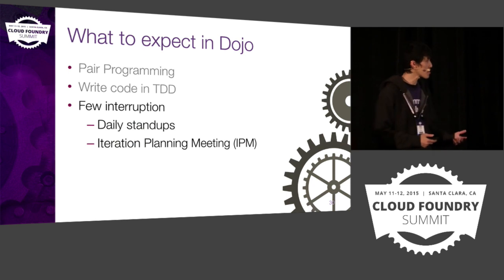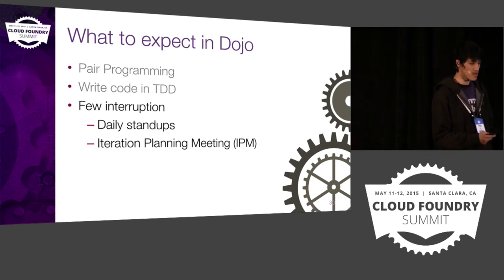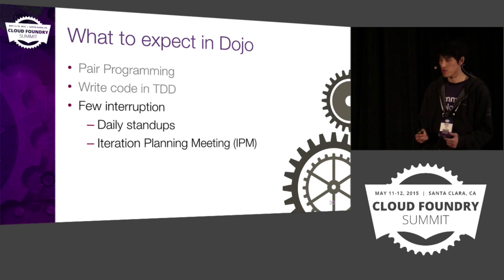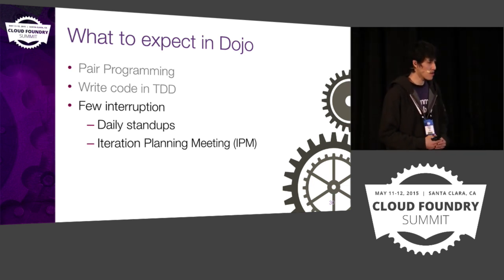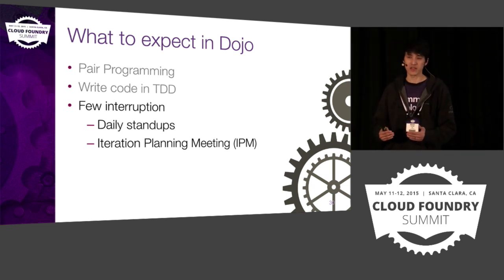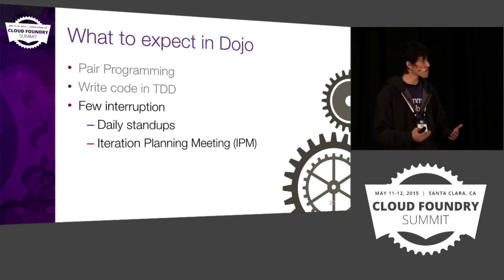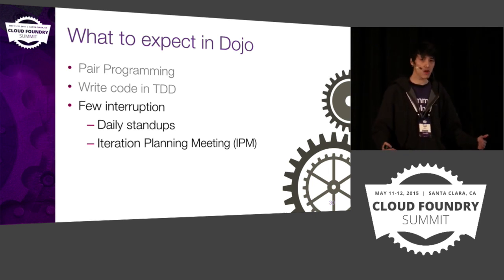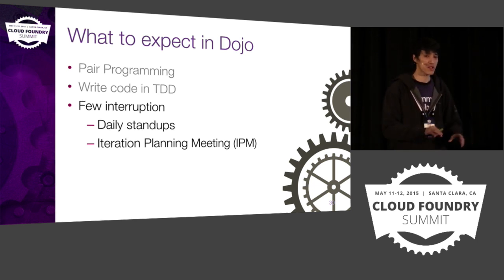The next meeting is the IPM — Iteration Planning Meeting. This usually happens at the beginning of the week, typically Monday. The teams come together with the PM to scope and estimate the work for the week. We'll bring up any potential blockers or difficulties, and the team votes on the difficulty of each story or work item and records them in the backlog.